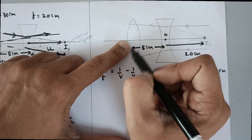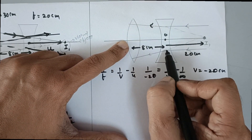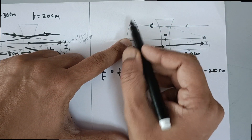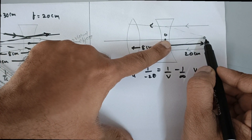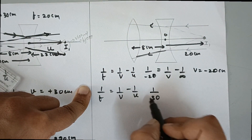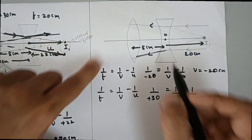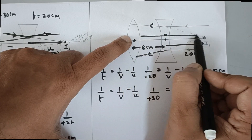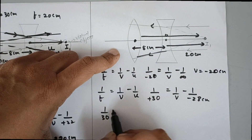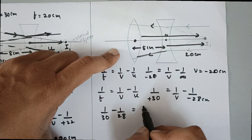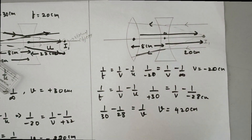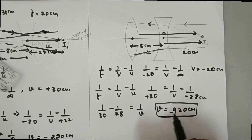This image behaves as an object for the convex lens. The rays are diverging, so the object distance for the convex lens is 20 + 8 = 28 cm, and since it is against the direction of the incident ray, u = −28 cm. Applying 1/f = 1/v − 1/u with f = +30: 1/30 = 1/v − 1/(−28), solving gives v = −420 cm. I leave the LCM calculation to you.